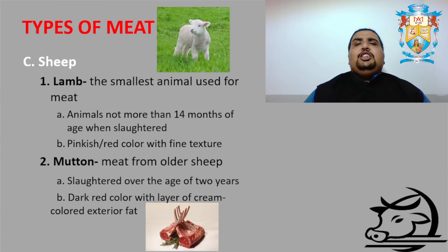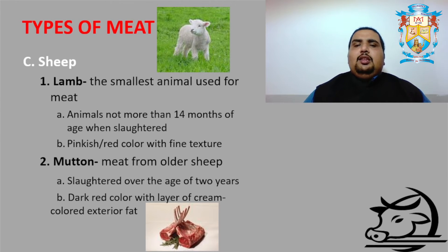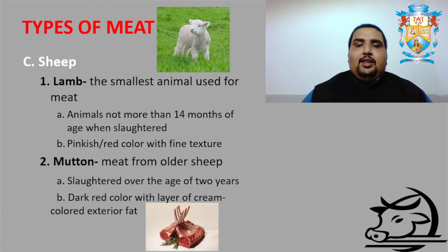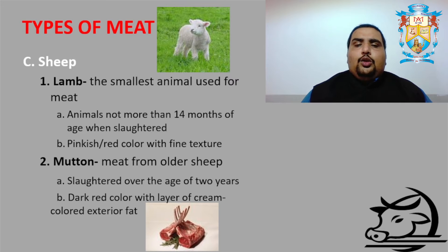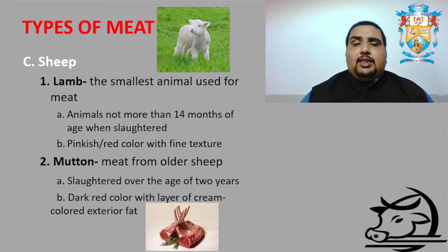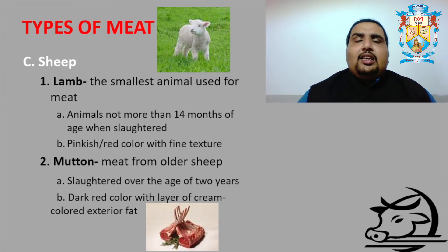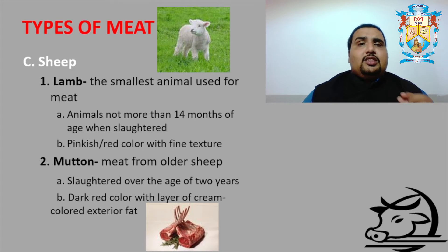Next we have sheep. As you can see a small lamb picture, lamb is the smallest animal used for meat. Animals not more than 14 months of age when slaughtered are called lamb meat. The meat color is pinkish red with fine texture — this meat is very tender. Then mutton is meat from older sheep slaughtered over the age of two years. Mutton is dark red in color with a layer of cream-colored exterior fat.